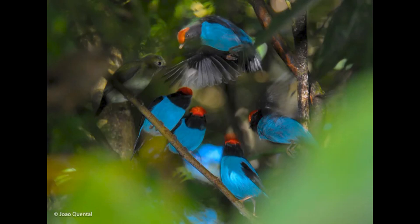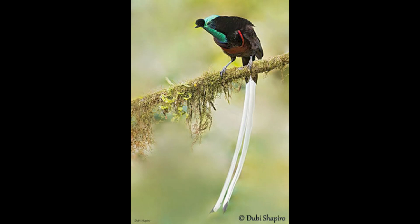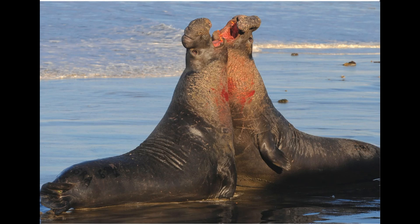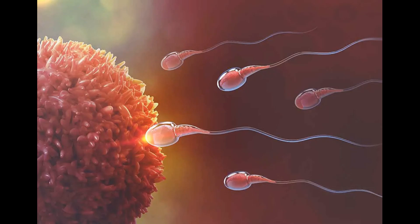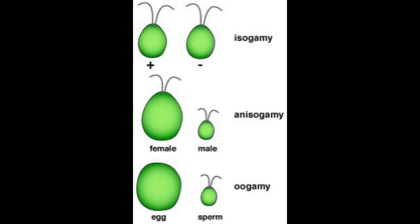Underneath all the dances and songs that males perform for females, underneath the dazzling male plumage, underneath the wounds that males inflict on each other, sex in animals leads to fusing an egg with a sperm, resulting in a zygote. Animals are oogamous, meaning they have large immobile egg cells and small motile sperm cells. This condition wasn't the ancestral one for the first eukaryotes, but for today's purposes, it's the only one with which we need concern ourselves.